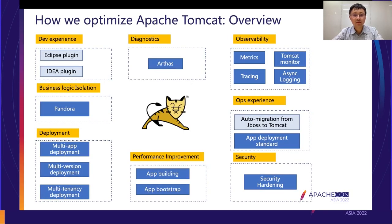This is an overview of how we optimize Apache Tomcat at Alibaba. We have done a lot of work, but due to time limits I will only cover the main parts, including observability, diagnostics, deployment, and performance improvement. And finally, I'll give some security tips.